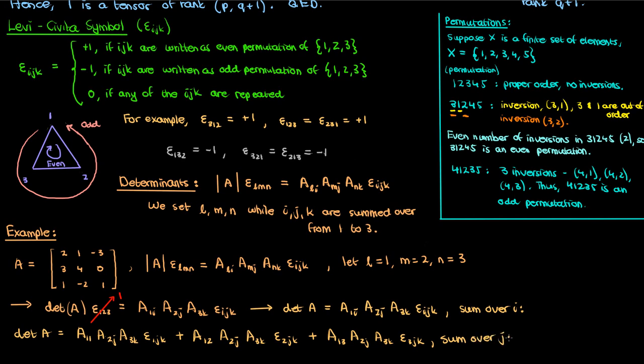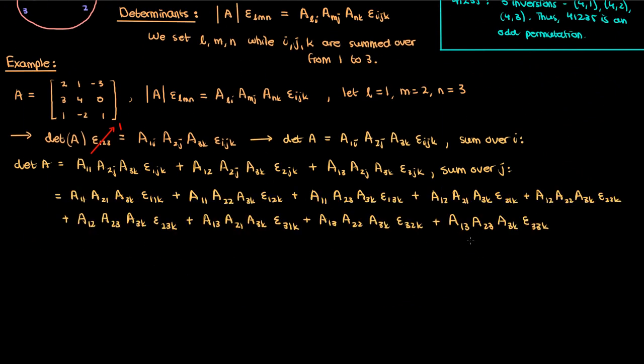Next we'll sum the j in each of these expressions from 1 to 3. However, recall that whenever the indices are repeated in the Levi-Civita symbol, the symbol actually becomes 0 according to its definition, so we can cancel any of the epsilons we have here where the indices are repeated. So that will greatly simplify this expression.